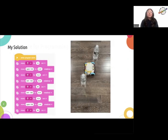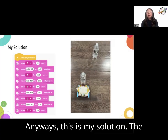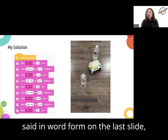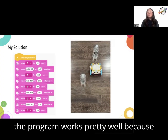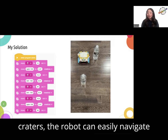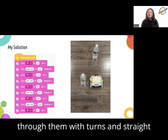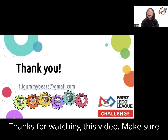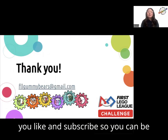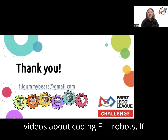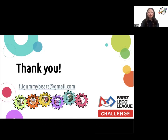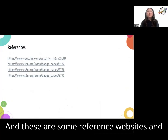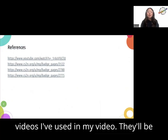We're excited to see what you try out. This is my solution — the program runs basically everything I described in word form on the last slide, now put into block form. As you can see on the right, the program works pretty well: when I put my water bottles as craters, the robot can easily navigate through them with turns and straight movements. If you have any questions, feel free to leave a comment below or reach us through our email. These are some reference websites and videos used in this video — they'll be linked in the description. See you soon, thank you.